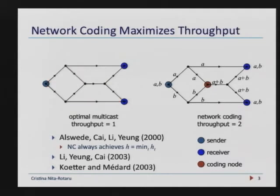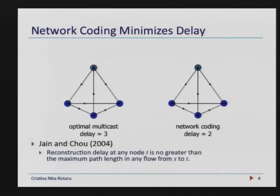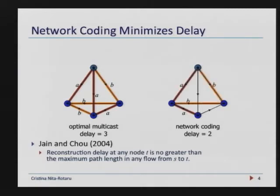I also want to show you another example about delay. If you want to multicast two packets to three receivers, looking at the example on the left, it's always going to take three hops to send a packet. With network coding, we can do that in two hops, because one of the packets sent is a coded packet — the XOR of the two packets A and B that I wanted to send.